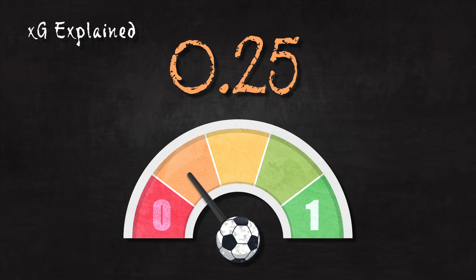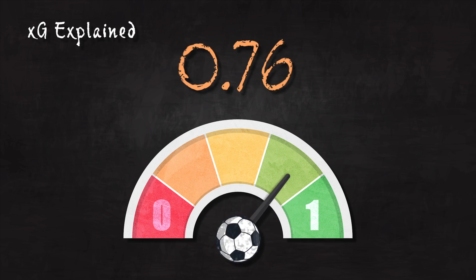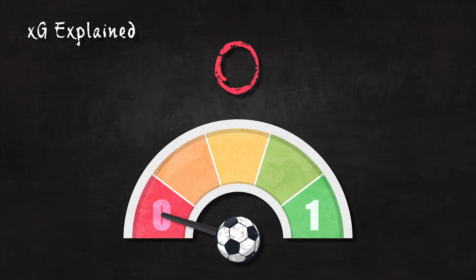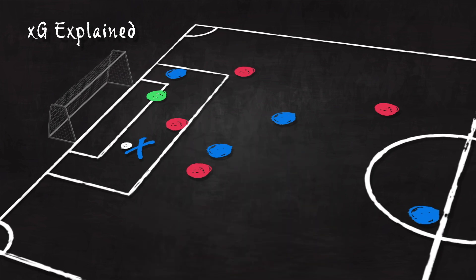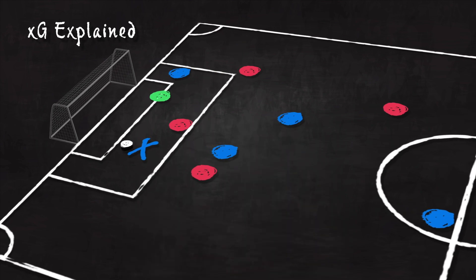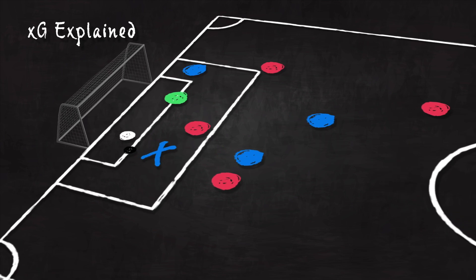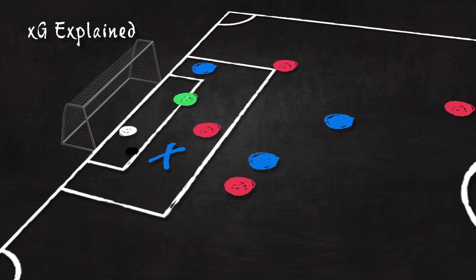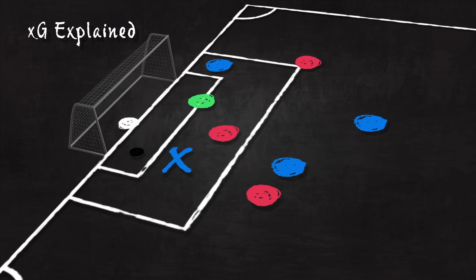XG is measured on a scale of probability from 0 to 1. An XG of 0 means there is no chance the shot will result in a goal. An XG of 1 means the shot will hit the back of the net 100% of the time. Here is an example: this player strikes the ball from outside the 6-yard box and their shot has an XG of 0.5 — in other words, a 50% chance of scoring.